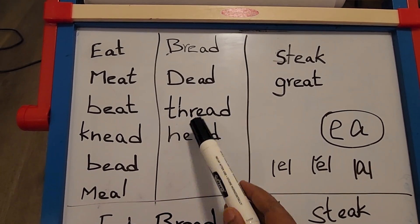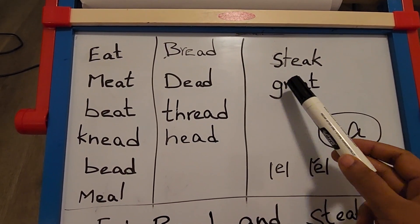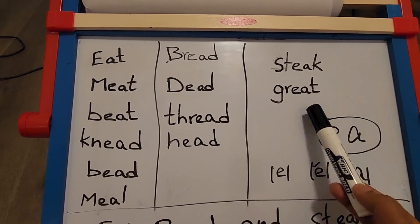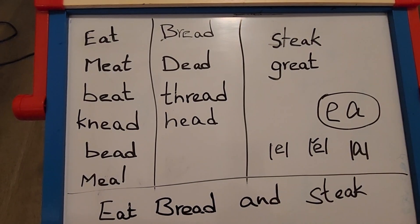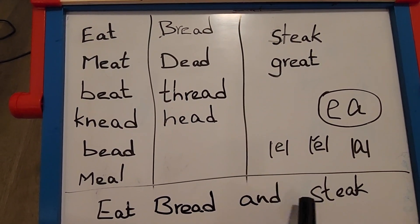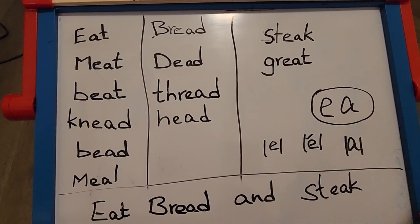Here, steak, great - it's not greet, it's great. So to remember this, there is a simple sentence: eat bread and steak. I hope this is helpful to you all, thank you.